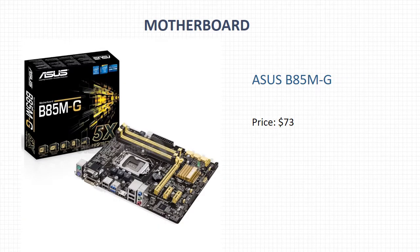The second component is the motherboard. I chose the Asus B85-MG. This motherboard supports up to four DDR3 memory slots with a total capacity of 32 gigabytes. It is also equipped with features that help protect important hardware components from electric shocks or any problems that may occur during operation, and its price is $73.